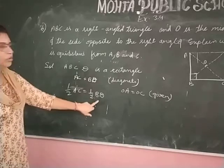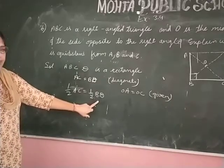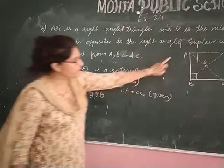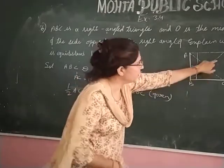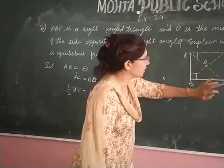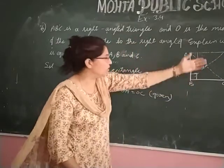So what came here? AC is equal to BD, it's a diagonal. So if you take half of it, half of AC, we can write AO. And half of BD, we can write OB or OD.